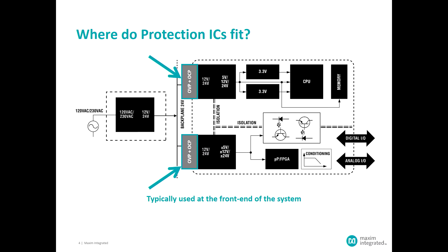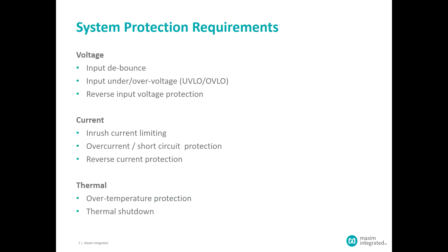We're talking about devices that operate at up to 60 volts, usually in the 24 to 48 volt range, and that handle the amount of current a typical system card or module might draw — usually not more than 10 amps, and often less. When looking at system protection, there are three different categories of faults to protect against: voltage, current, and temperature.